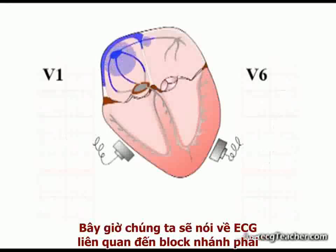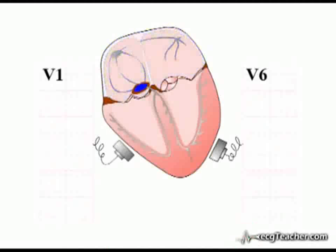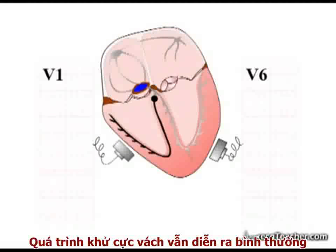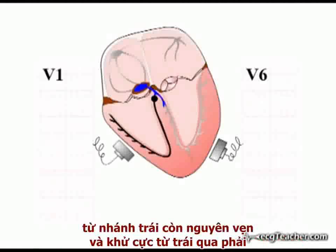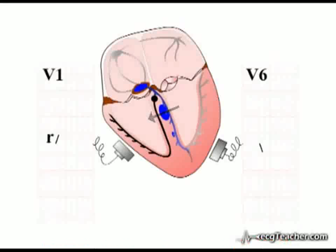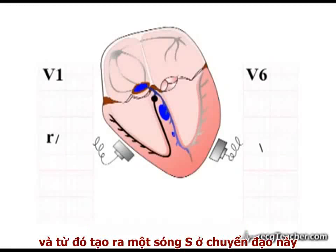We will now deal with the ECG findings associated with right bundle branch block. When conduction in the right bundle branch is blocked, septal depolarisation proceeds as normal from the intact left branch, from left to right, producing an initial R wave in lead V1. Depolarisation arriving as normal in the left ventricle then generates an S wave in this lead.